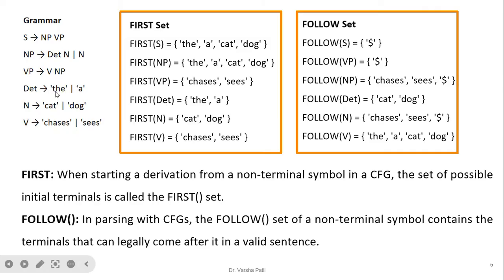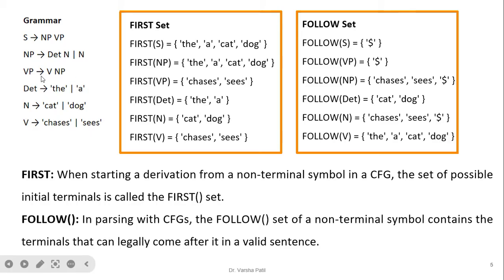So 'the' and 'a' are terminals from determiner, and 'cat' and 'dog' from N. To calculate First(NP), since NP gives determiner and N, which are non-terminals, we follow determiner to get 'the' and 'a', and N to get 'cat' and 'dog'. For First(VP), VP gives V which is a non-terminal, so we follow V to get 'chases' and 'sees' — that is the first set of VP. Determiner directly gives terminals 'the' and 'a', and N gives 'cat' and 'dog', and V gives 'chases' and 'sees'.